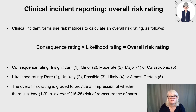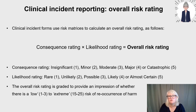When looking at clinical incident reporting there will be an overall risk rating. Clinical incident forms use risk matrices calculated as follows: consequence rating multiplied by likelihood rating equals the overall risk rating. A consequence rating may be insignificant (1), minor (2), moderate (3), major (4) or catastrophic (5). Likelihood rating may be rare (1), unlikely (2), possible (3), likely (4) or almost certain (5). The overall risk rating is then graded to indicate whether there is a low or extreme risk of reoccurrence. Note this is an example — check what your own employer uses, as documentation evolves.